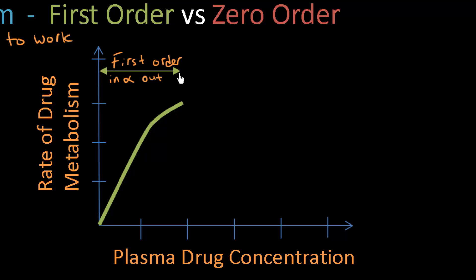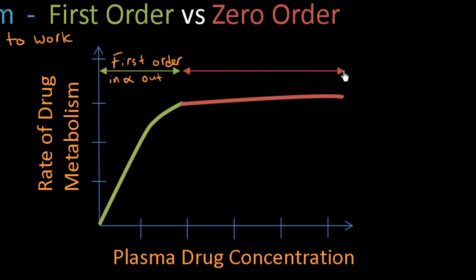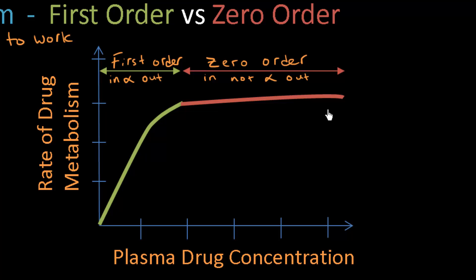After this plasma drug concentration — after this point — we have now maxed out all of our enzymes. So as the plasma drug concentration increases, as we move to the right on the graph, we shouldn't see an increase in the rate of drug metabolism. And that is what we see here. From here onward we are at zero order kinetics, or zero order elimination. The in is no longer proportional to the metabolized product leaving the liver.